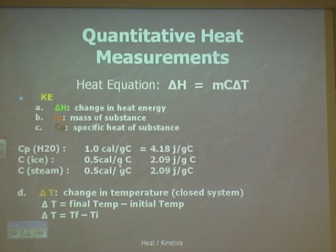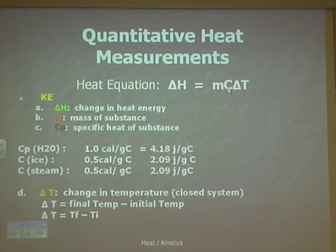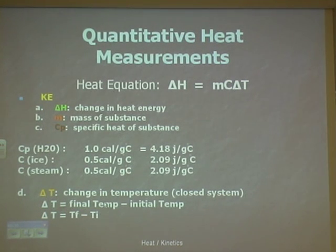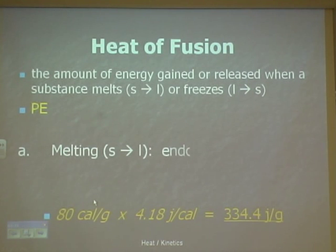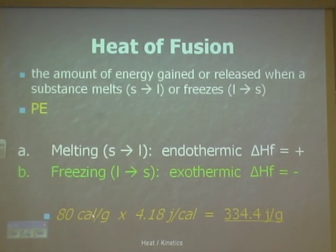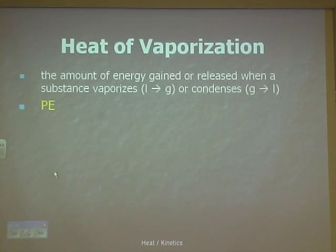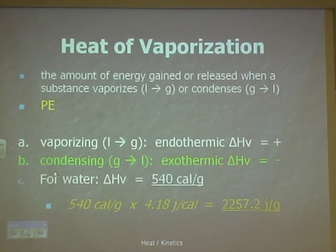Ice has a specific heat of 0.5 calorie per gram degree Celsius, and steam is the same as ice. Delta T is always the final temperature minus the initial. To find the heat of fusion — the potential energy — we multiply mass times 80 calories per gram, or we can change it to joules. For heat of vaporization, we take the mass and multiply it by 540 calories per gram for every gram we have.